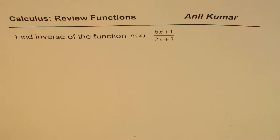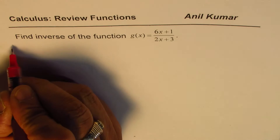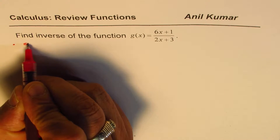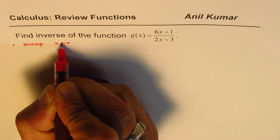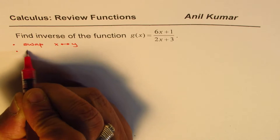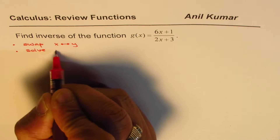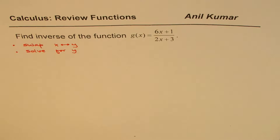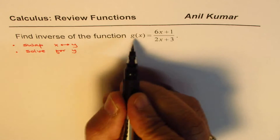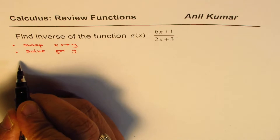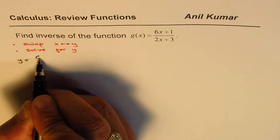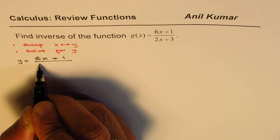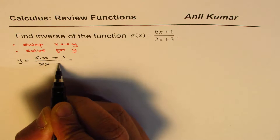To find the inverse function, we basically follow two steps. First, we swap x and y values, and then solve for y to get the inverse function. So g(x) is basically the y value, and we write this as y = (x + 1) / (2x + 3).